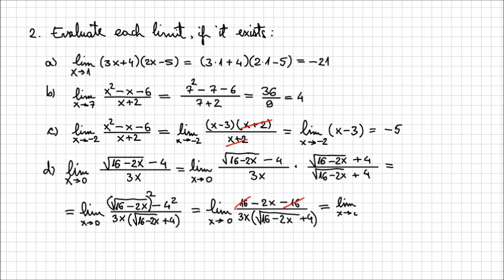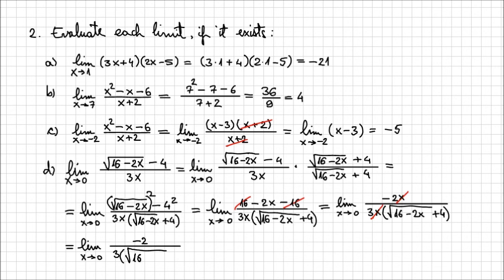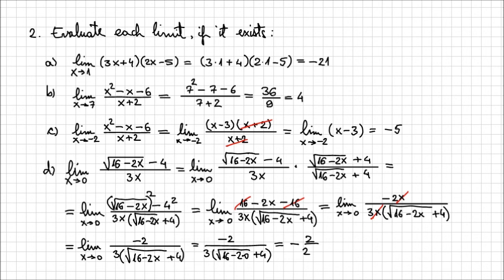Continuing, the limit as x approaches 0 becomes minus 2x over 3x times (square root of 16 minus 2x plus 4). I can cancel the x in the numerator with the x in the denominator, giving limit as x approaches 0 of minus 2 over 3 times (square root of 16 minus 2x plus 4). Plugging in x equals 0: minus 2 over 3 times (square root of 16 plus 4), which gives minus 2 over 24, simplifying to minus 1 over 12. This is how you approach indeterminate forms of 0 over 0.